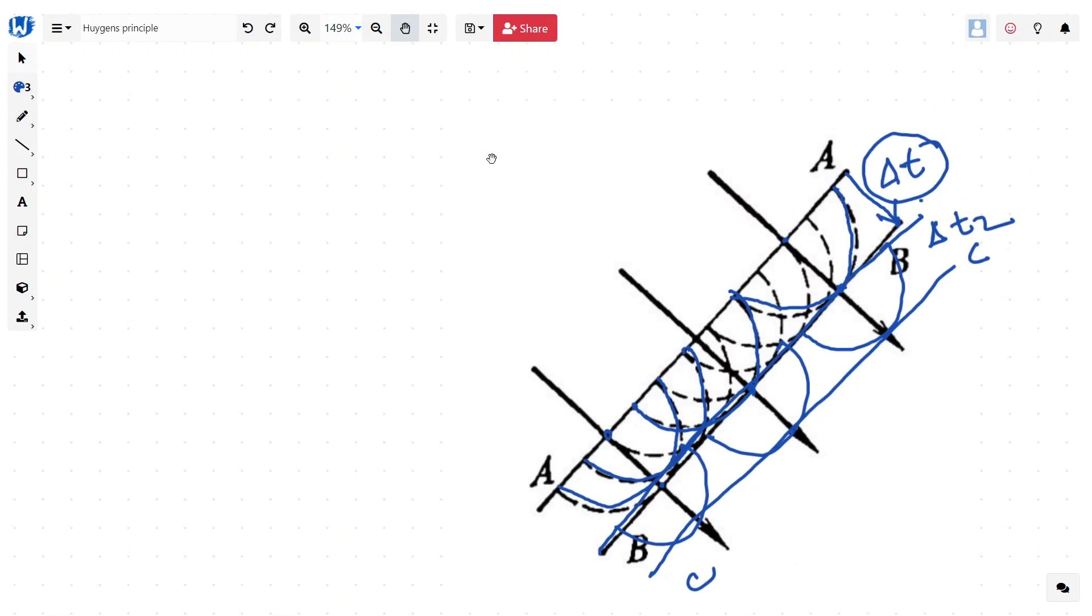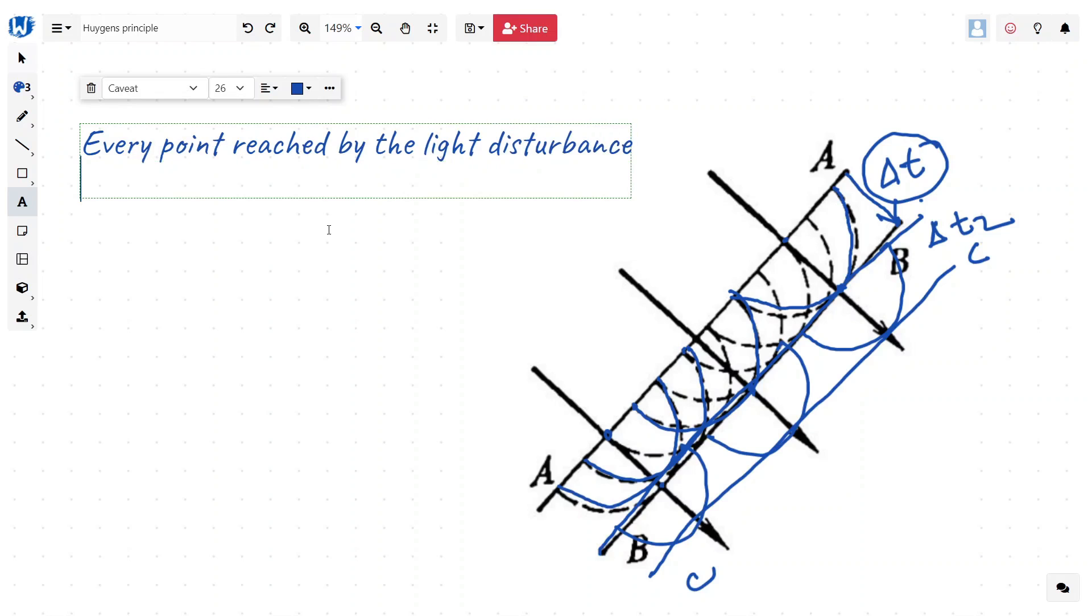This is called Huygens principle which states that every point reached by the light disturbance becomes in its turn the source of secondary wave.